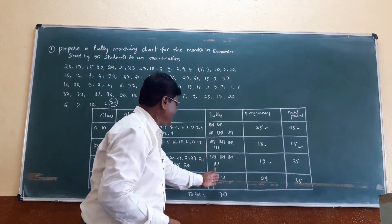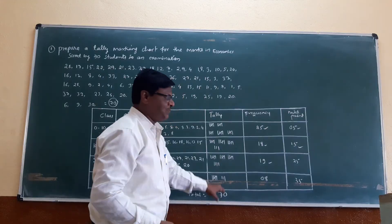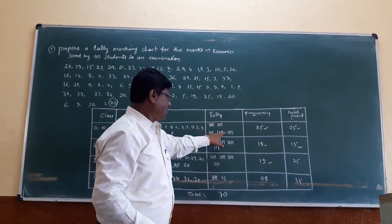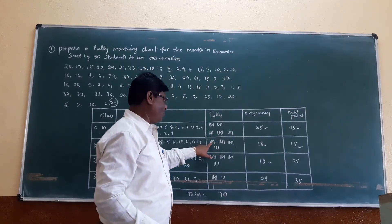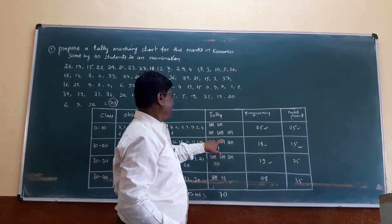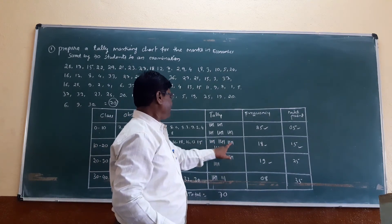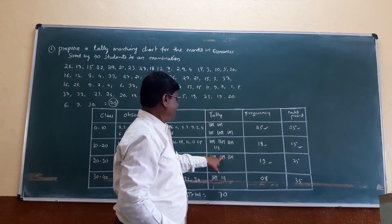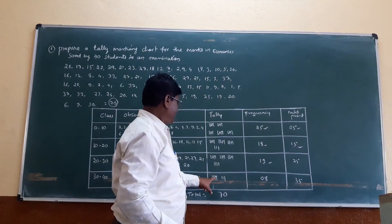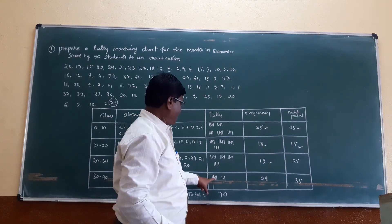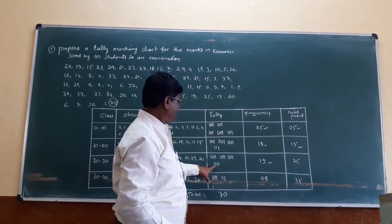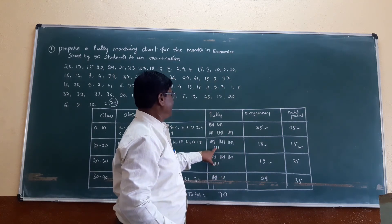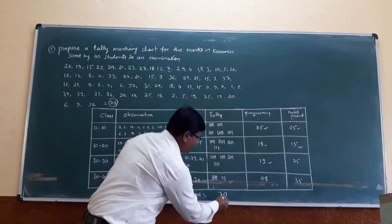The total tally is 70: 5, 10, 15, 20, 25, 30, 35, 40, 45, 50, 55, 60, 64, 67, 70. The total is 70.